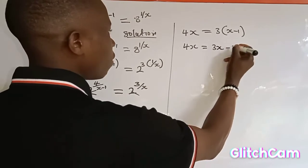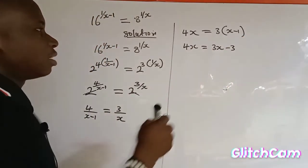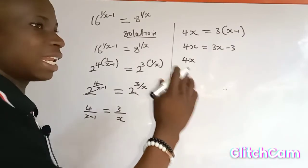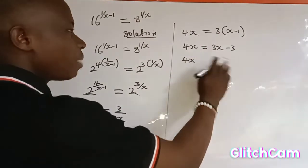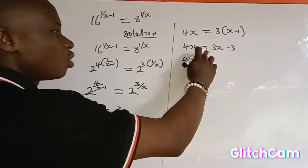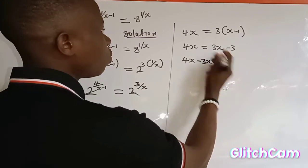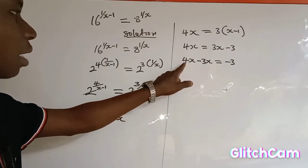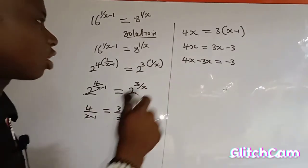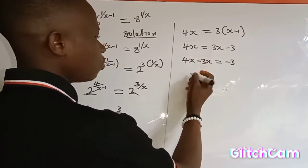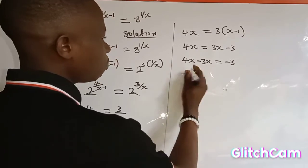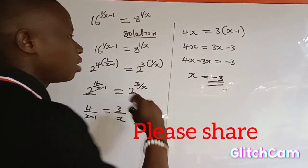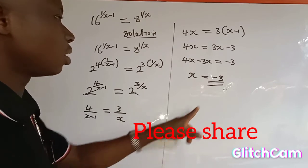On the left-hand side I have 4s. I'll use 3 to expand the bracket: 3 multiplied by s gives 3s, and 3 multiplied by negative 1 is negative 3. Collecting like terms, 3s crosses the equality sign and becomes negative 3s. So 4s minus 3s equals negative 3, which gives 1s, meaning s equals negative 3. The value of s in this equation is negative 3.